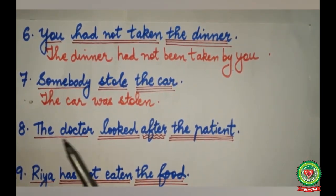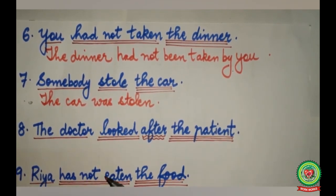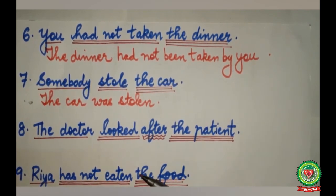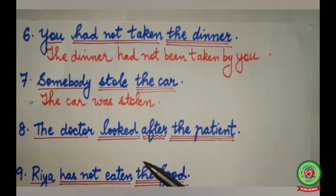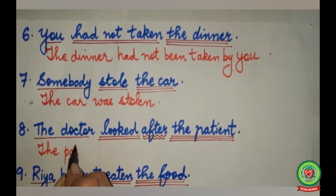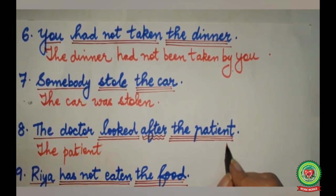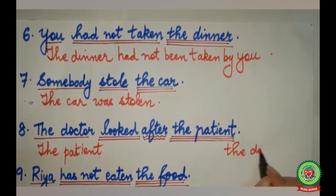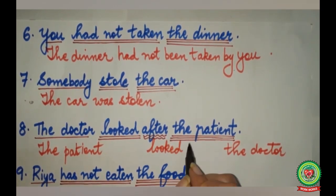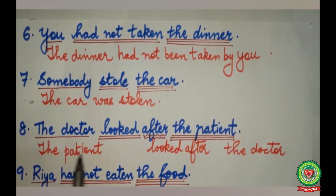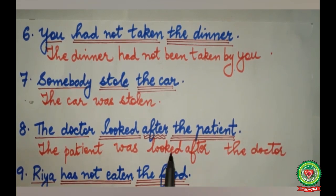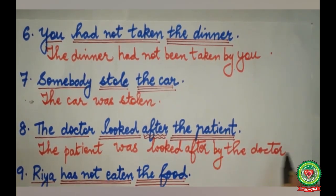Eighth sentence: The doctor looked after the patient. According to the rule, if the preposition is given in the active voice, it will also come in the passive voice after your verb. The patient will come in the beginning, the doctor will go to the last. Looked will remain looked, and after looked we add the word after. Looked is past form, so we use was. The sentence becomes: The patient was looked after by the doctor.